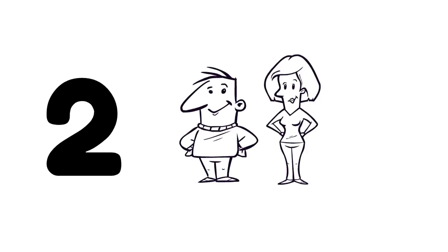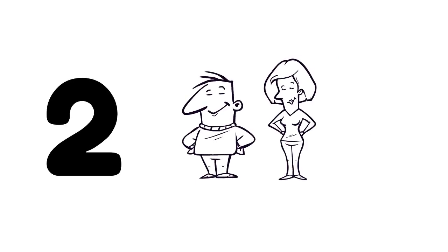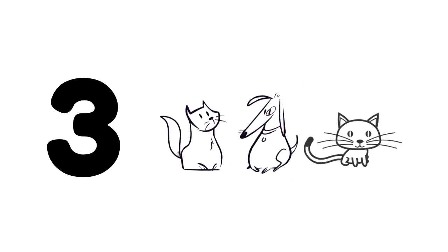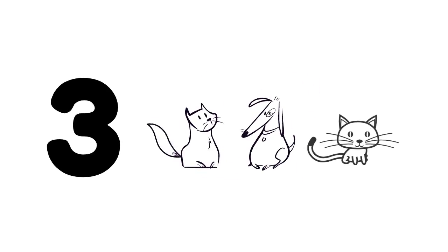We use whole numbers to refer to whole objects. For example, one cloud, two people, three animals.